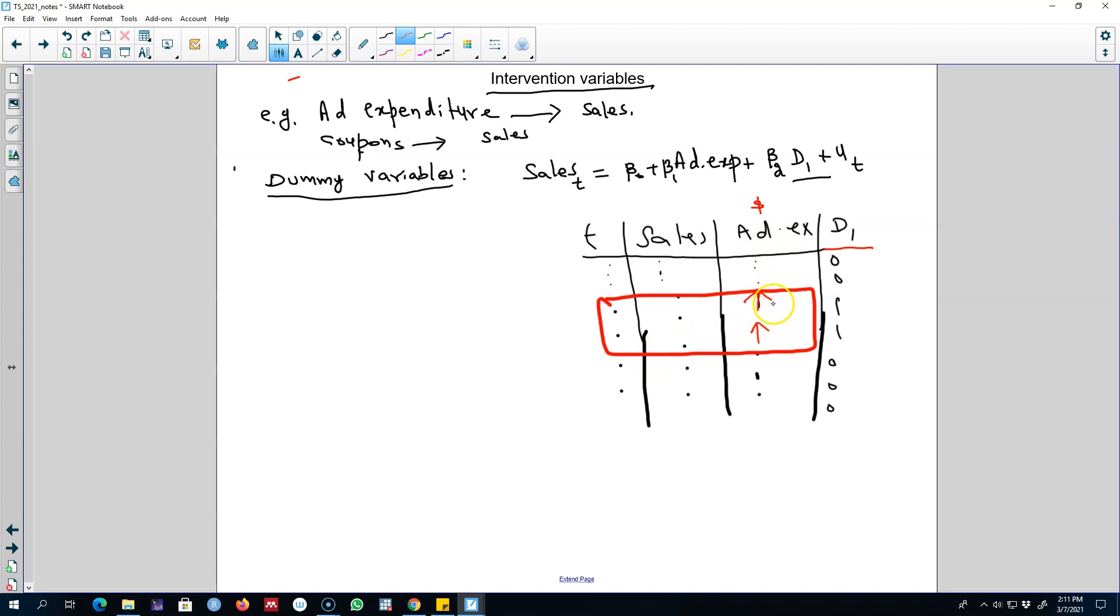During these periods of time we increase the ad expenditures, hence this dummy variable D1 will take on a value of one and zero otherwise. Now we can regress this model sales on this dummy variable.